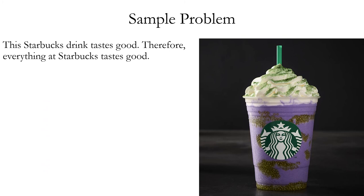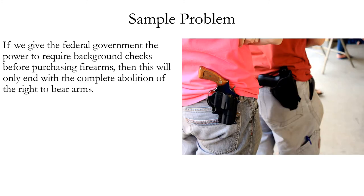Third: this Starbucks drink tastes good; therefore, everything at Starbucks tastes good. This is a hasty generalization fallacy — there's only one example being used, and one example is almost always too few. It's one out of dozens or hundreds of products served by Starbucks, so it's definitely too small of a sample. Fourth: if we give the federal government the power to require background checks before purchasing firearms, then this will only end with the complete abolition of the right to bear arms. This is a slippery slope fallacy — even if giving the government one regulatory power makes complete abolition slightly more likely, it doesn't increase that probability by much since they are very different policies.